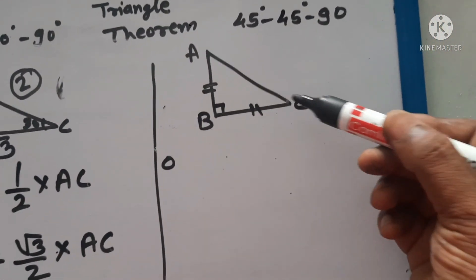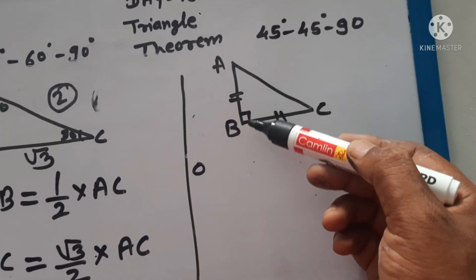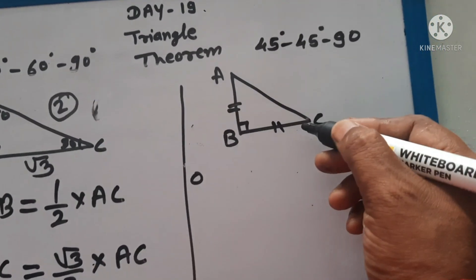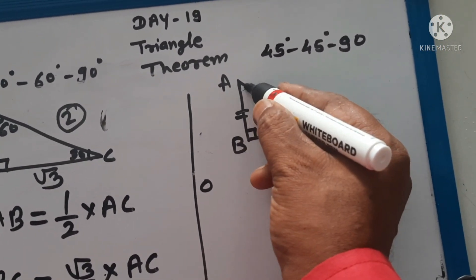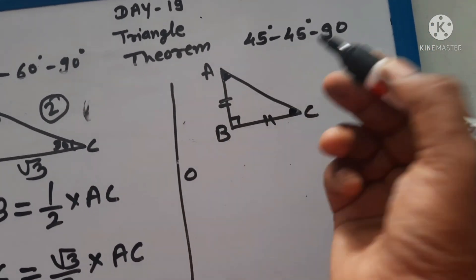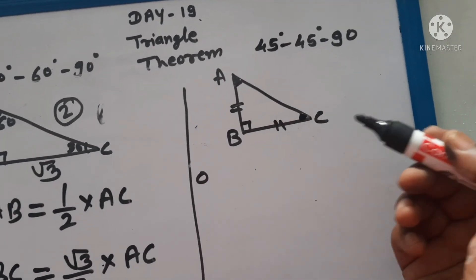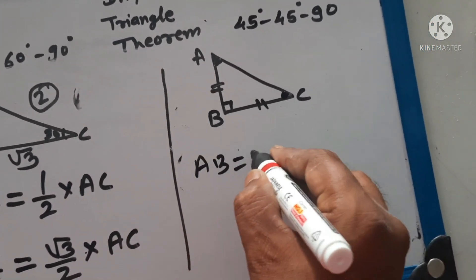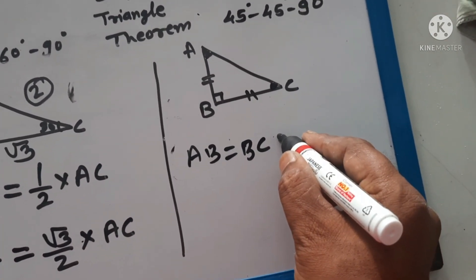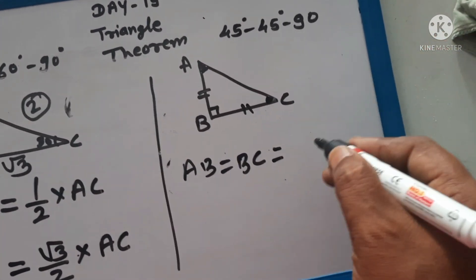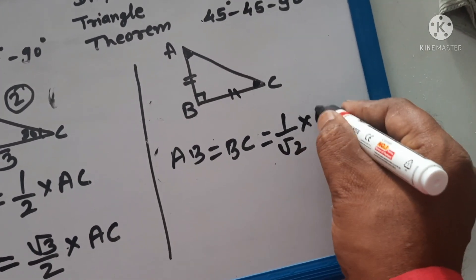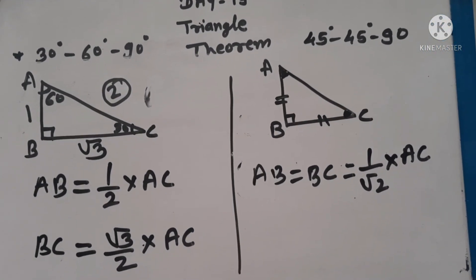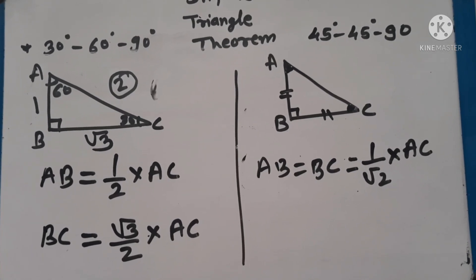Now the isosceles right angle triangle — it has two equal sides. In the given figure, AB is equal to BC. This is the 45-45-90 theorem. The opposite angles of equal sides are also congruent, so angle A and angle C are both 45 degrees. The opposite side of the 45 degree angle is equal to 1 upon root 2 of the hypotenuse AC. By using this theorem, we can solve exercise number day 19.